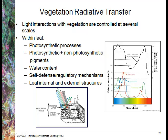We can also look at the absorption of particular pigments within a leaf. Looking at this graph from 400 to about 750 nanometers, we can see a number of different leaf pigments. The green line is chlorophyll A, and you can see its absorption peaks — around about 675 nanometers, and another at around 460 nanometers. This also coincides with the action spectrum of photosynthesis, which is a combination of the other pigments used in photosynthesis as well.